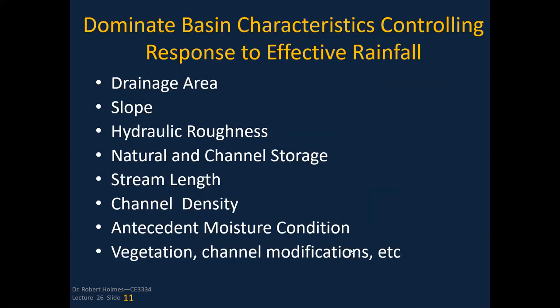The dominant basin characteristics that control response to excess precipitation include: drainage area, slope of the drainage area and channels, hydraulic roughness on hillslopes and the main channel, natural and channel storage such as depressions or stormwater detention basins, stream length, channel density — higher density means faster runoff — antecedent moisture condition as discussed with the curve number, and vegetation and channel modifications.